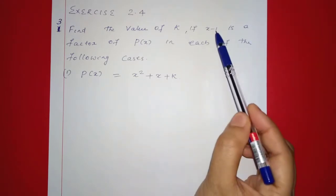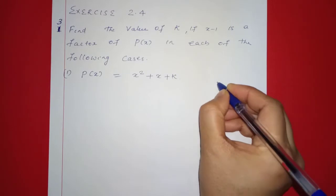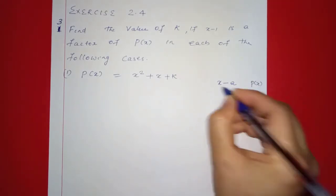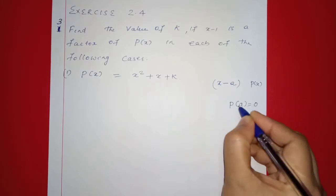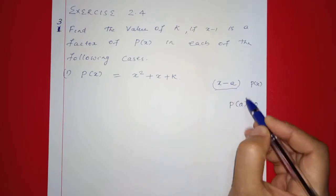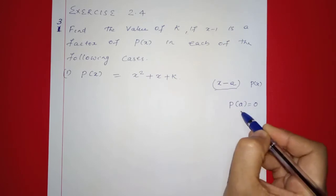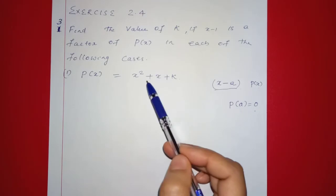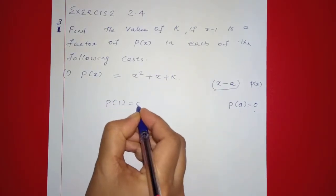What is the factor of x minus 1? In the previous classes, we learned that if x minus a is a factor, then p of a is equal to 0. So, x minus 1 is a factor means p of 1 is equal to 0.